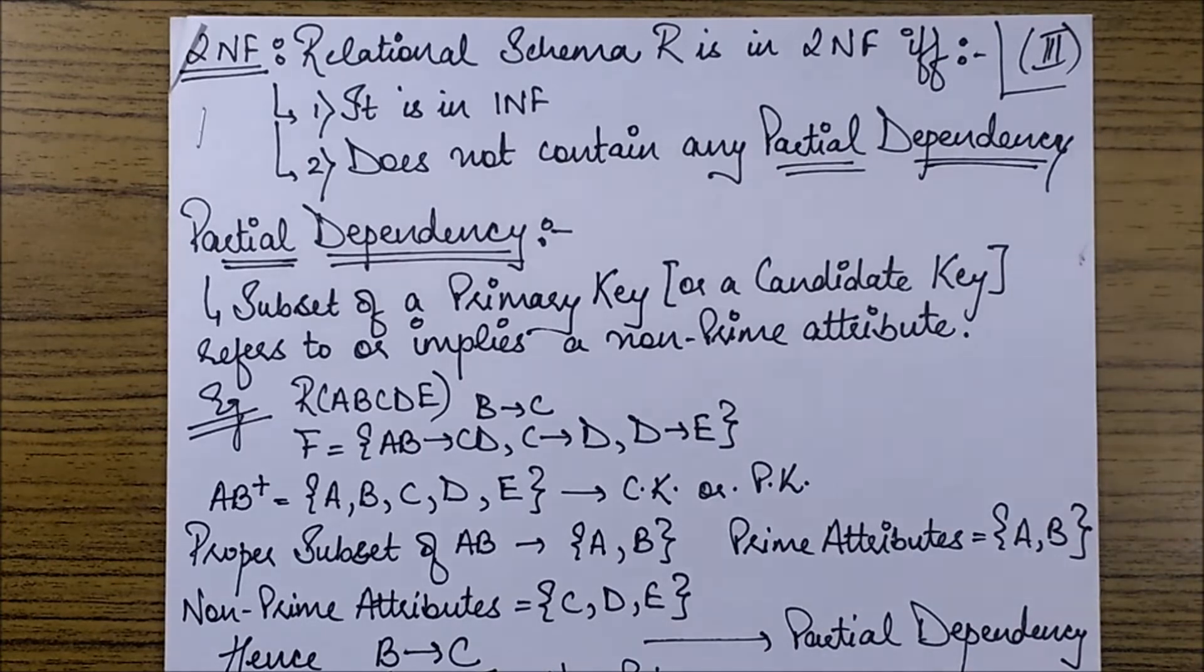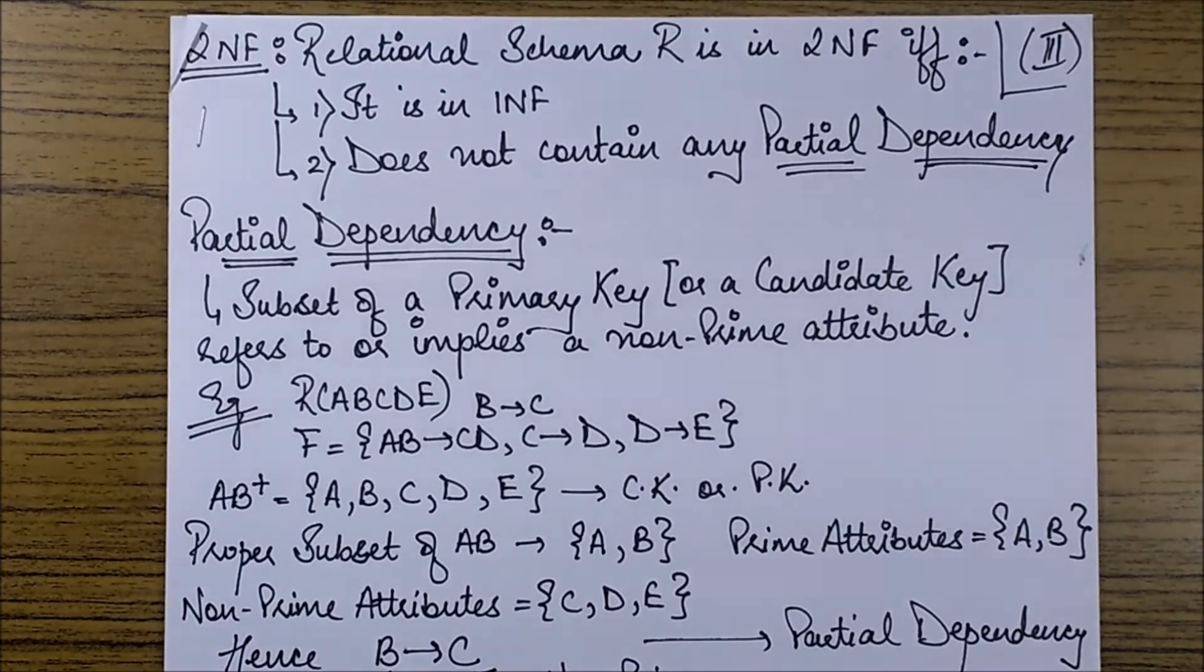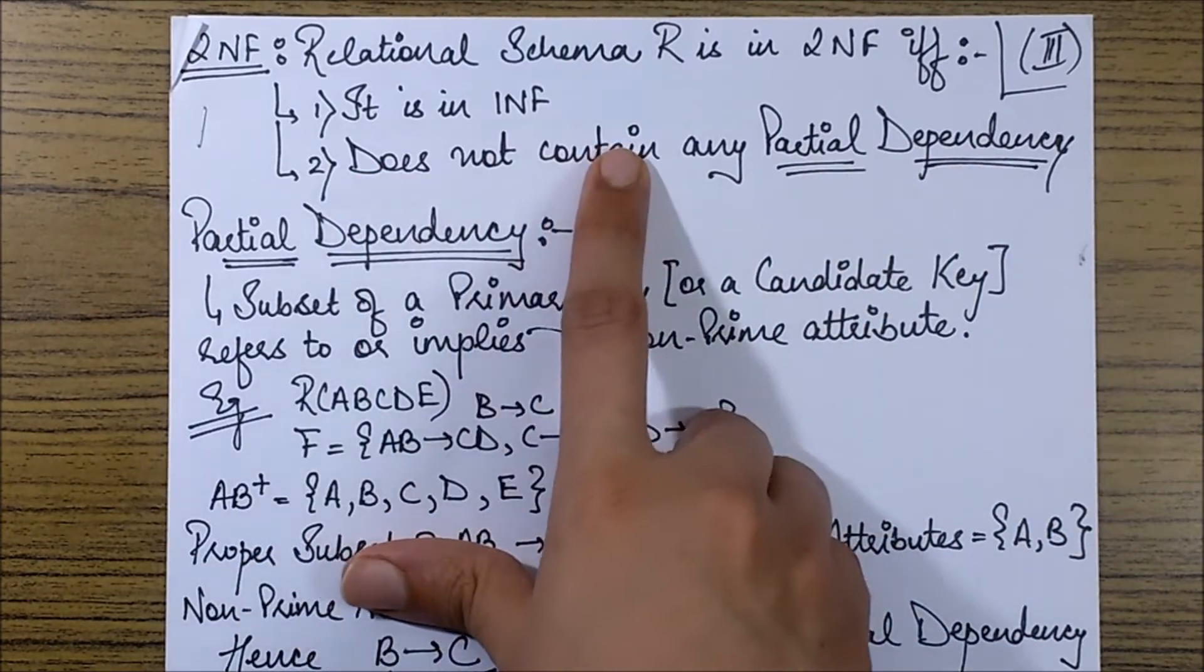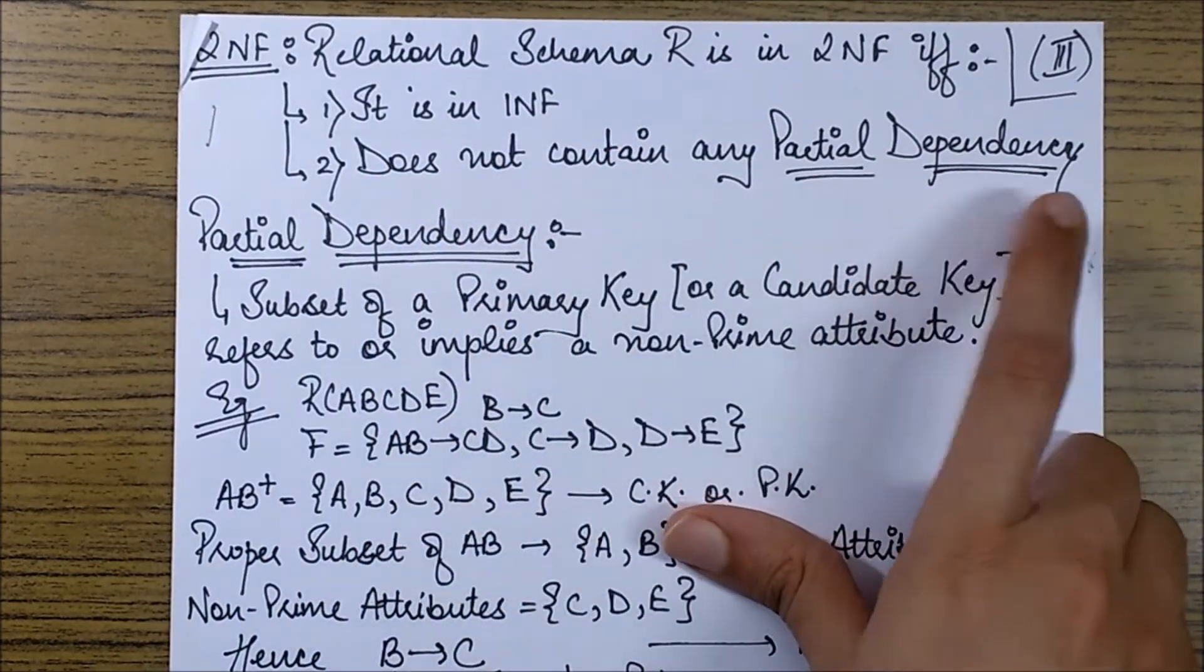And the condition for 2NF is that a relational schema R is in 2NF if it is in 1NF and it does not contain any partial dependency.